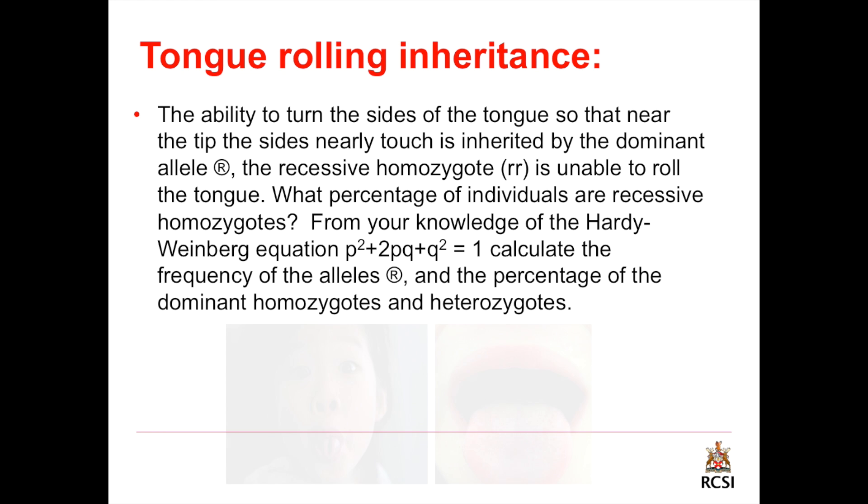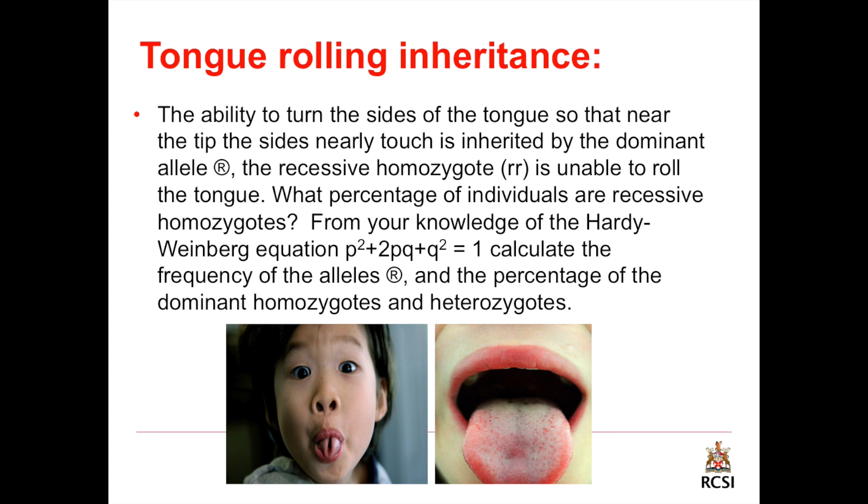Now we will solve some genetic problems. Tongue rolling inheritance. The ability to turn the sides of the tongue so that near the tip the sides nearly touch is inherited by the dominant allele. The recessive homozygous double small r is unable to roll the tongue.